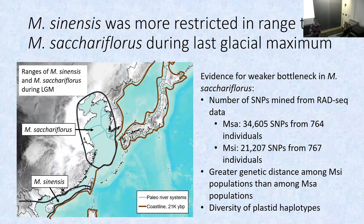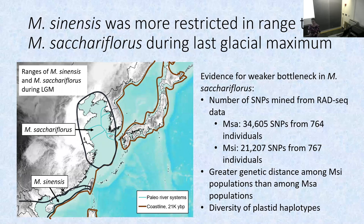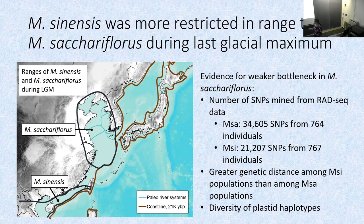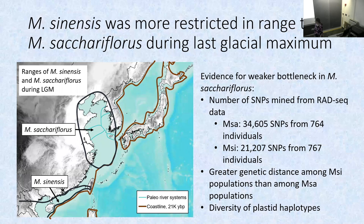We compared genetic diversity and estimated where these species were during the last glacial maximum. Sacchariflorus, based on its center of diversity, was spread over a much wider area — this was a land mass at the time. Sinensis was confined to a small strip. Using the same marker system, we got many more markers and more plastid haplotypes with sacchariflorus. The sinensis populations are more diverged from each other, suggesting smaller effective population size and bigger bottleneck events as it spread through Asia.